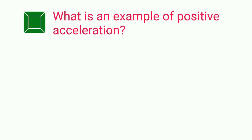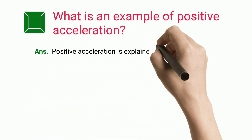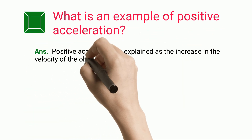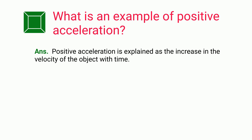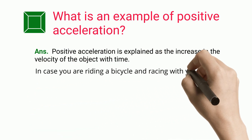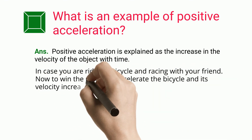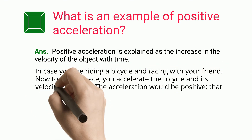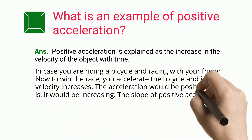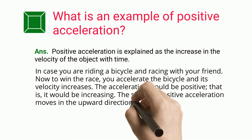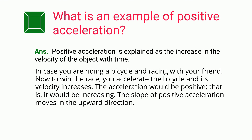What is an example of positive acceleration? Positive acceleration is explained as the increase in the velocity of an object with time. For example, if you are riding a bicycle and racing with a friend, to win the race you accelerate the bicycle and its velocity increases — the acceleration would be positive and increasing. The slope of positive acceleration moves in the upward direction.